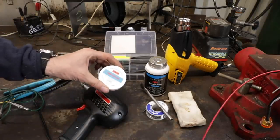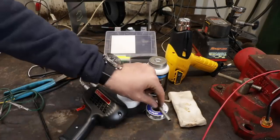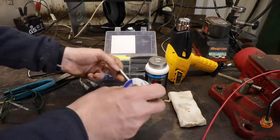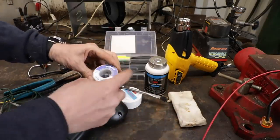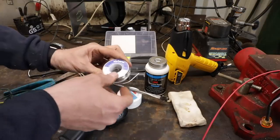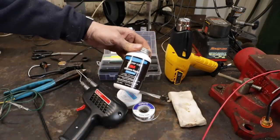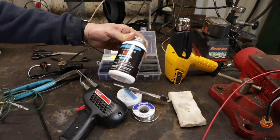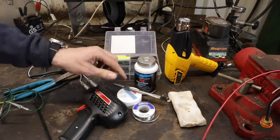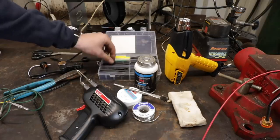You want some rosin paste flux, a little brush, and some rosin core solder. You don't want to use the solder used for plumbing, it's not the right stuff. And this right here, this stuff's amazing. This is a 3M silicone dielectric grease that we use, as well as a good selection of shrink tubing.